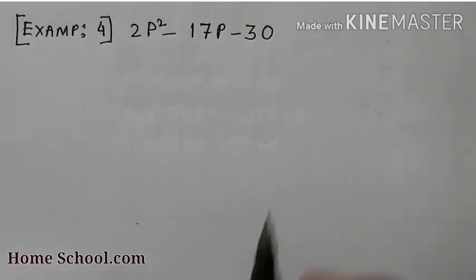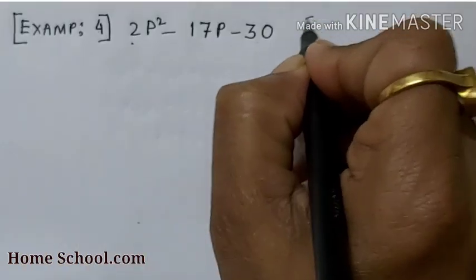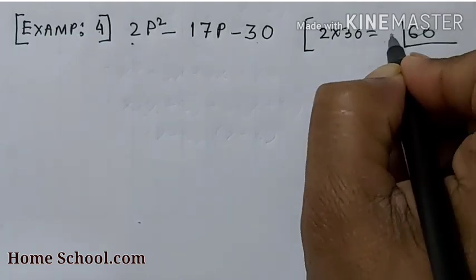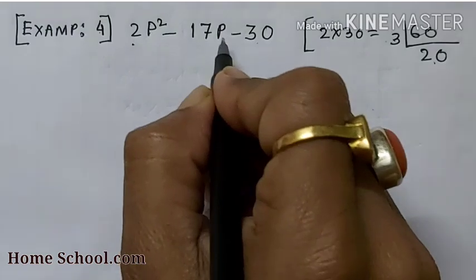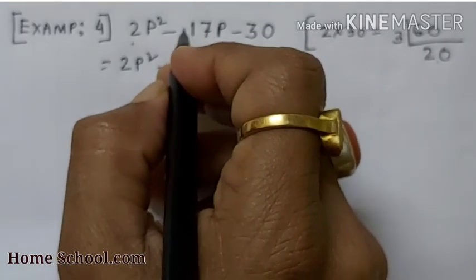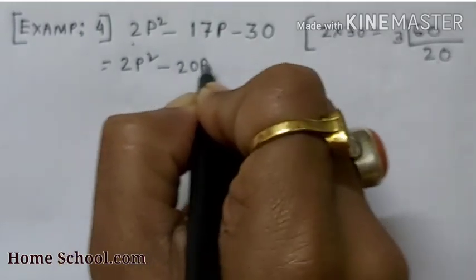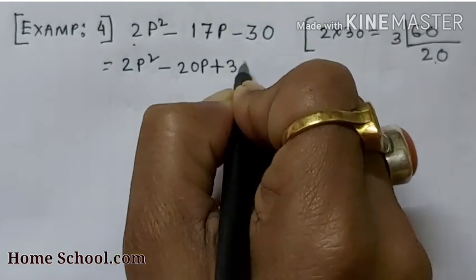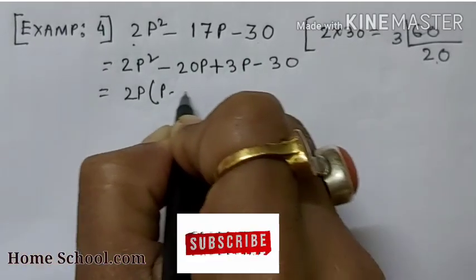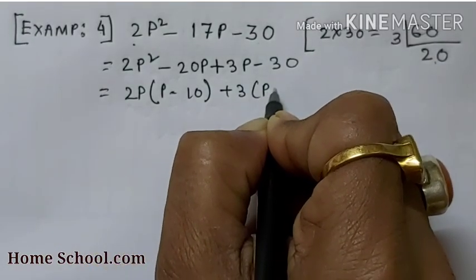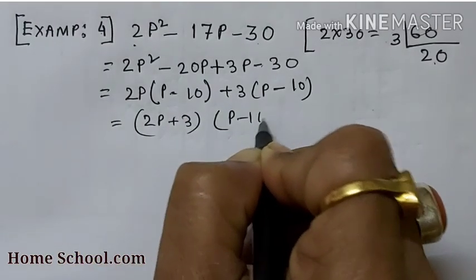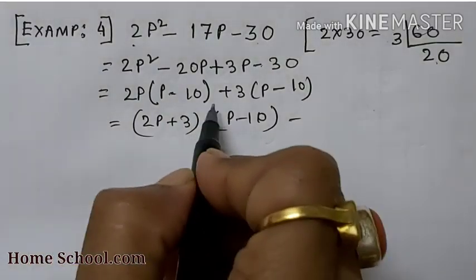Example 4: 2p² − 17p − 30. Multiply the first and last integers: 2 × 30 = 60. Doing the LCM of 60, we find 3 and 20 — because 20 − 3 = 17. We write 2p² − 20p + 3p − 30. Taking 2p common gives 2p(p − 10). Taking 3 common gives 3(p − 10). So the answer is (2p + 3)(p − 10).